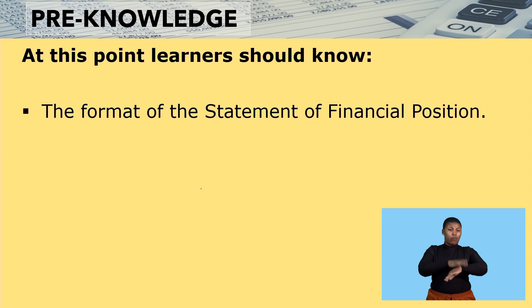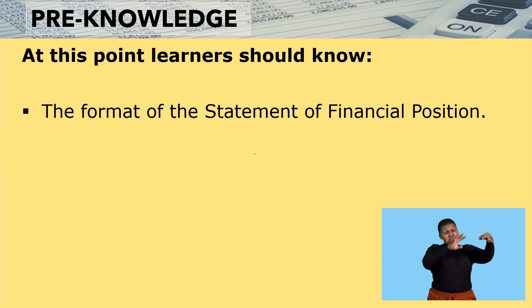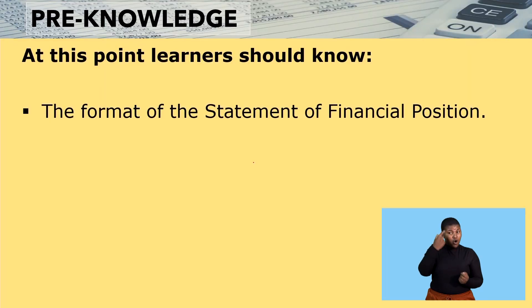At this point, you should already know the format of the statement of financial position. This is very important — when you're preparing your statement of financial position, you start with your assets. Under your assets, you have your non-current assets as well as current assets. Then you have your equity and liabilities, which is the second section of your statement of financial position. In this section, today we're going to be focusing on current liabilities.